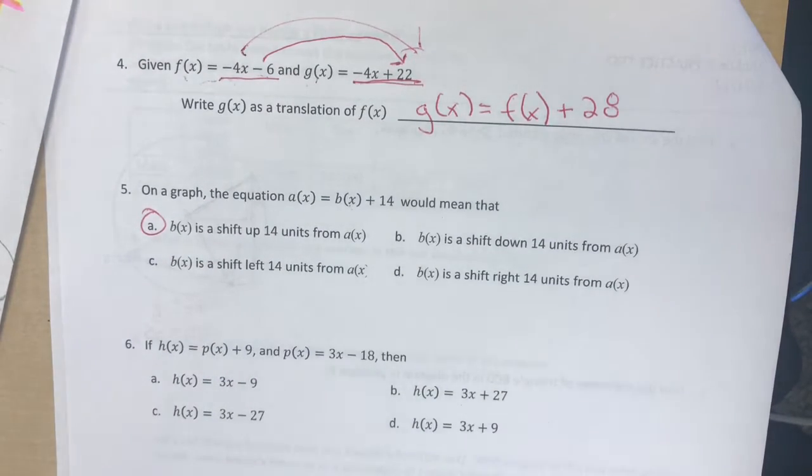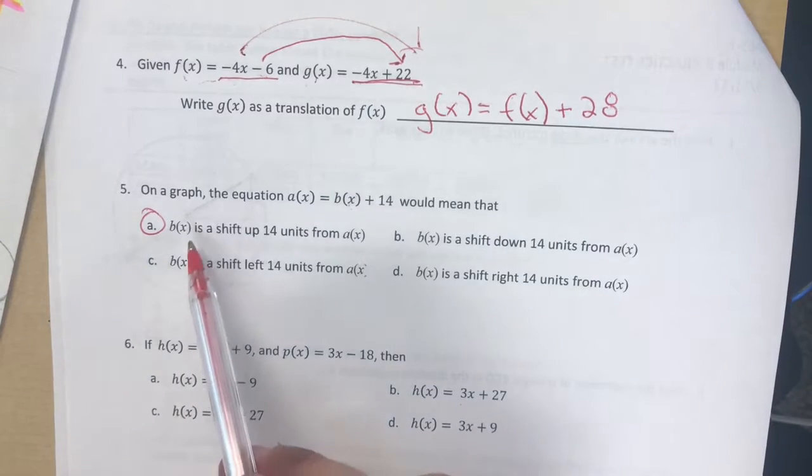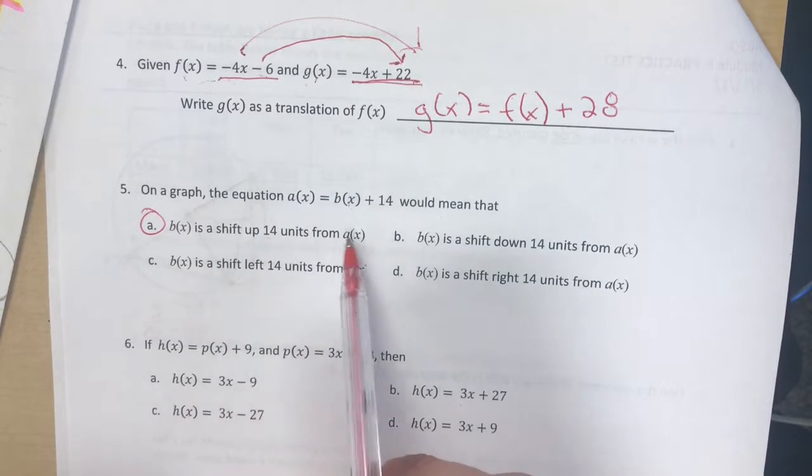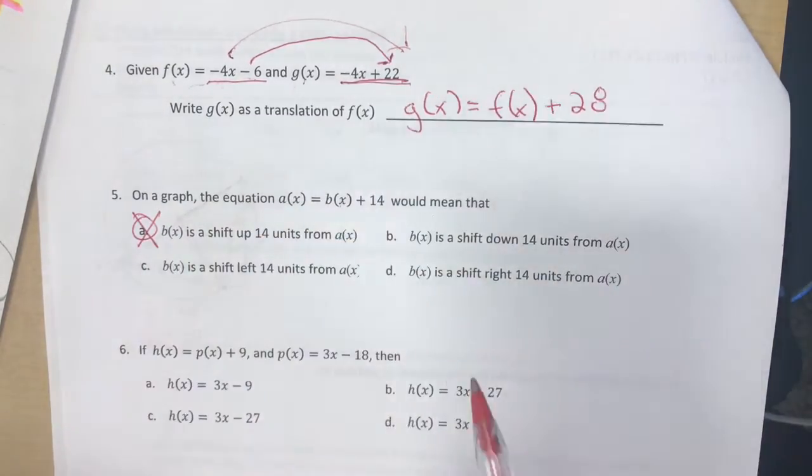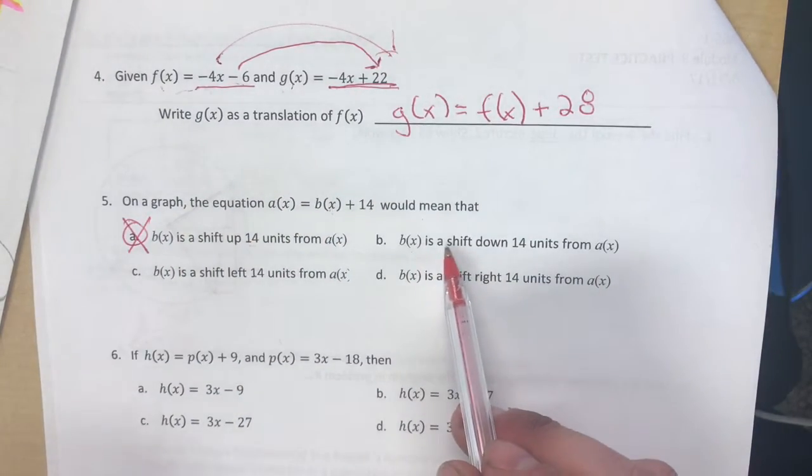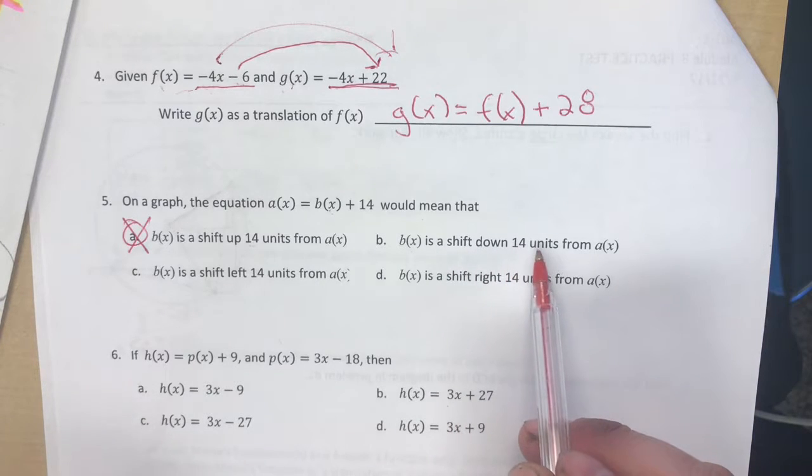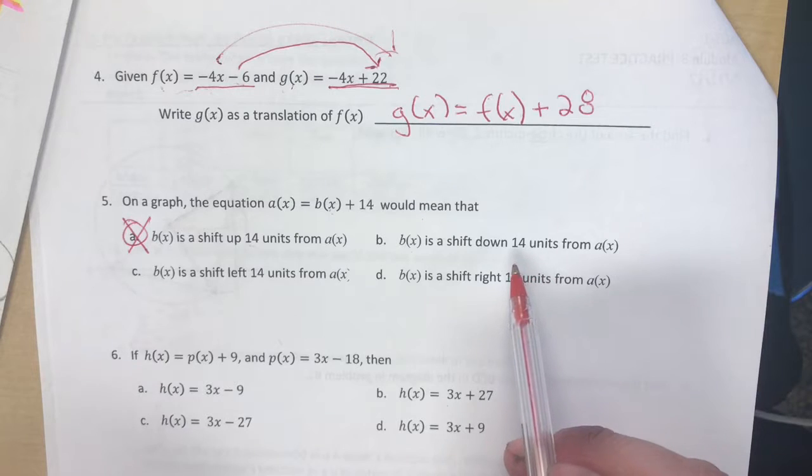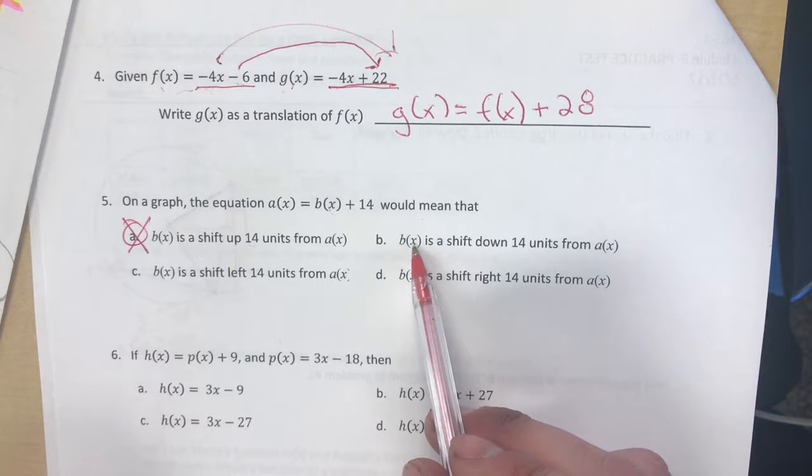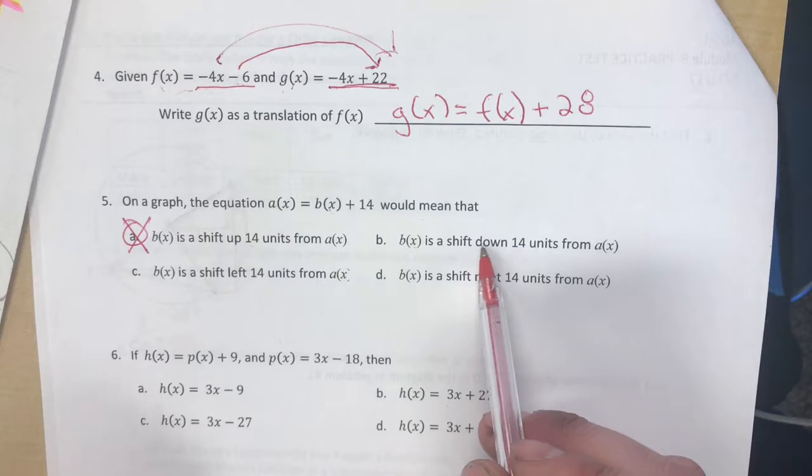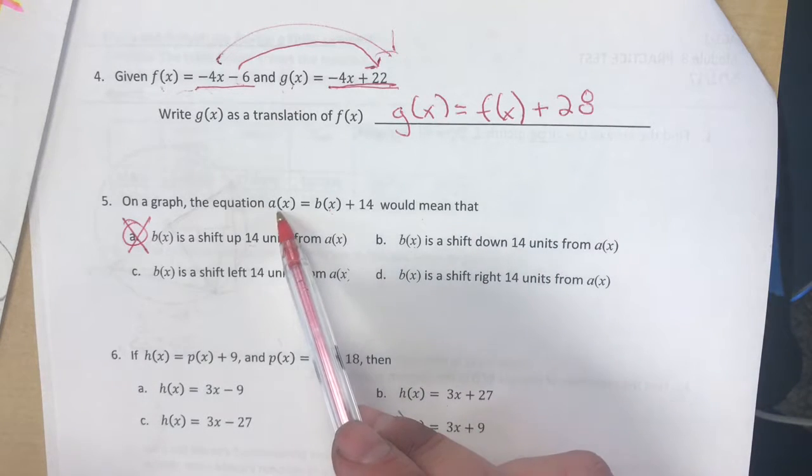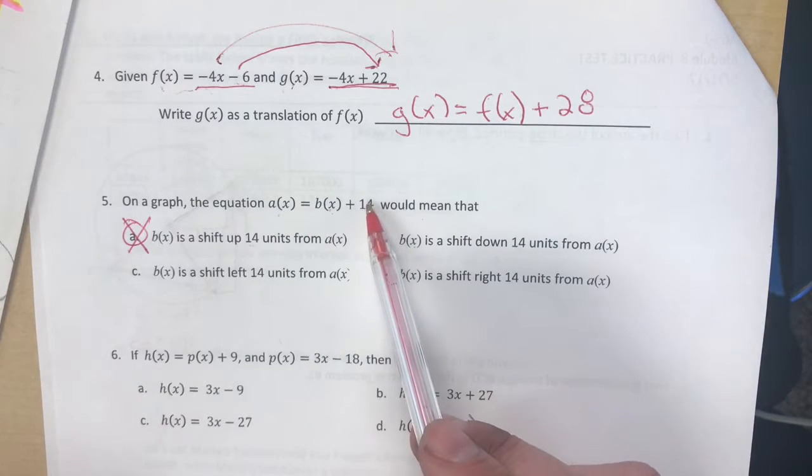That actually, as I suspected, is not correct. Because if b(x) is a shift up 14 units from a(x), then it would be written the other way around. So that one is not an answer. But b(x) is a shift down 14 units from a(x).